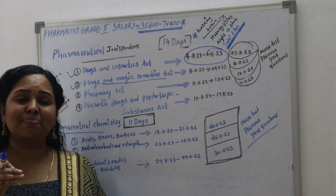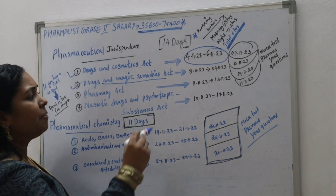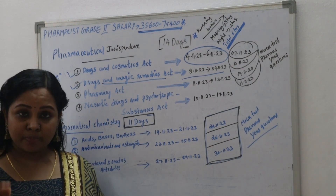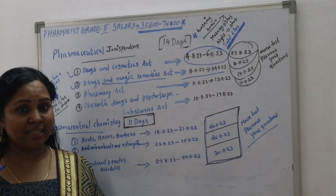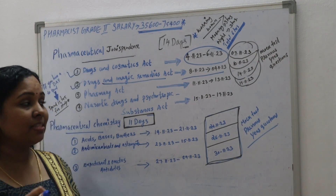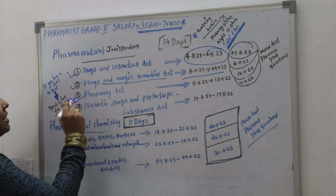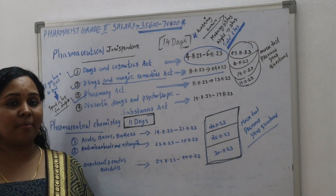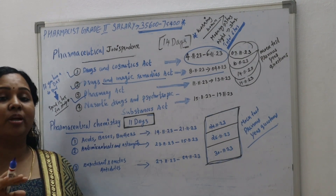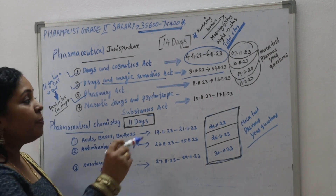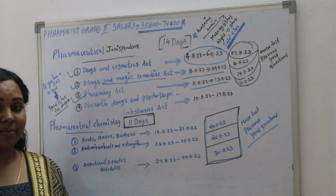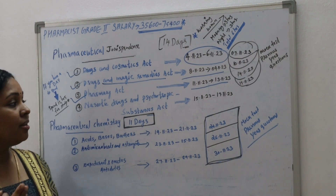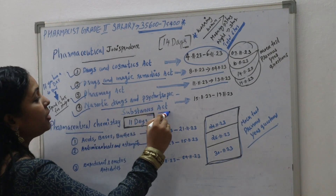The Drugs and Cosmetics Act is a very simple chapter. If you want to learn the Drugs and Cosmetics Act, you will start with the next chapter, then move on through the Drugs and Cosmetics Act. If you want to learn it thoroughly, you will continue with the Drugs and Cosmetics Act.